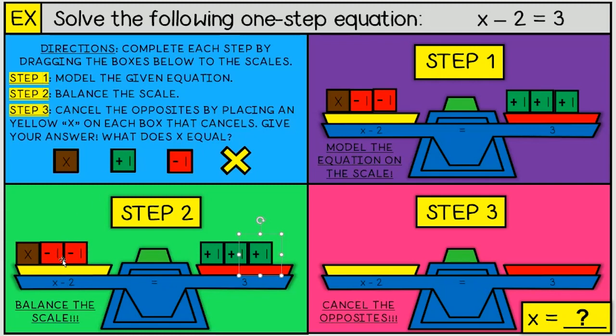I know that I can get rid of these by doing the opposite of negative 1, which is positive 1, and those will cancel. So since I have two negative 1s, I need two positive 1s. And again, step 2 says balance the scale. So in order to balance the scale, whatever I do on the left side, I need to also do on the right side. So since I added two on the left side, I need to add two on the right side. Okay, I'm done with step 2. I have balanced the scale.